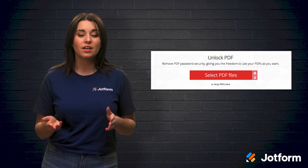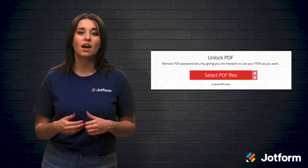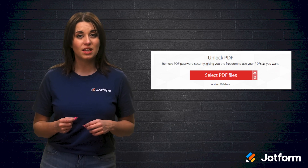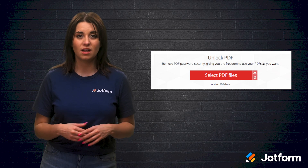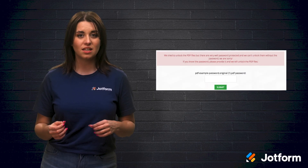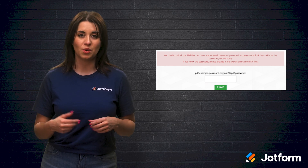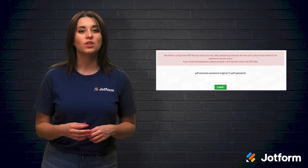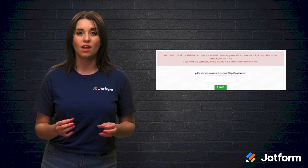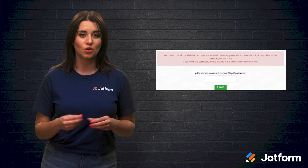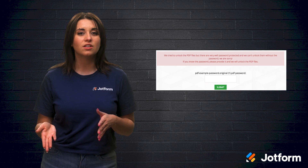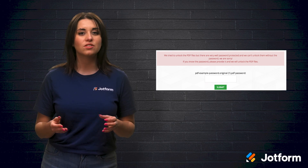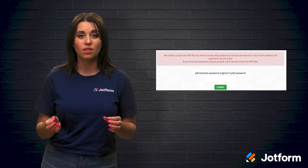You can also get files from services like Google Drive and Dropbox by using the icons on the right side of the 'Select PDF Files' button. Once you've chosen the PDF file, select the 'Unlock PDF' button at the bottom of the page. If a password is needed, a prompt will appear — enter the password and select the 'Submit' button. When your PDF document is unlocked, choose the 'Download Unlocked PDFs' button to save it to your computer. Alternatively, you can copy the link to your unlocked document or save it to Google Drive or Dropbox using the icons next to the download button.